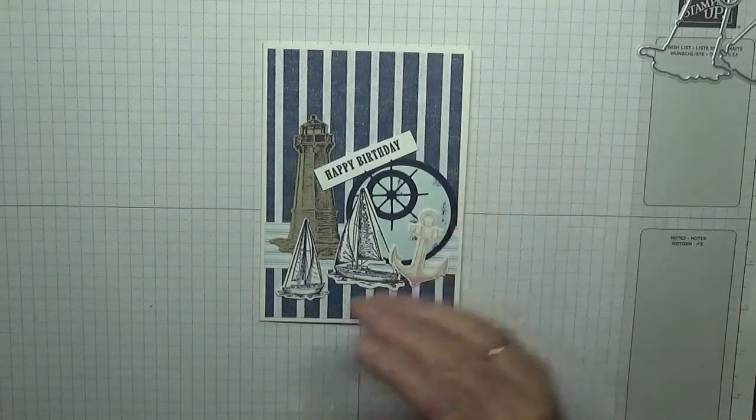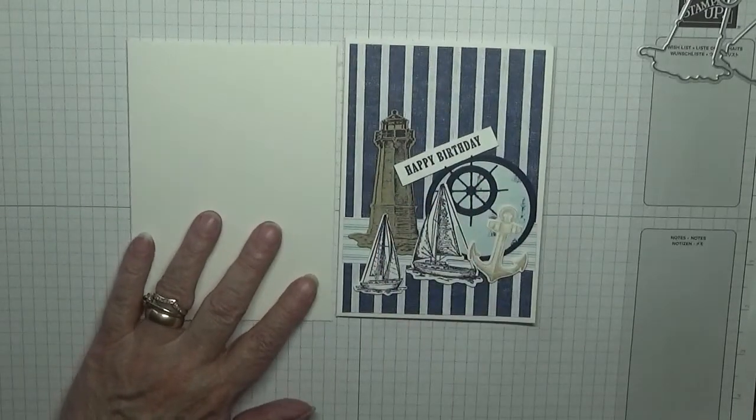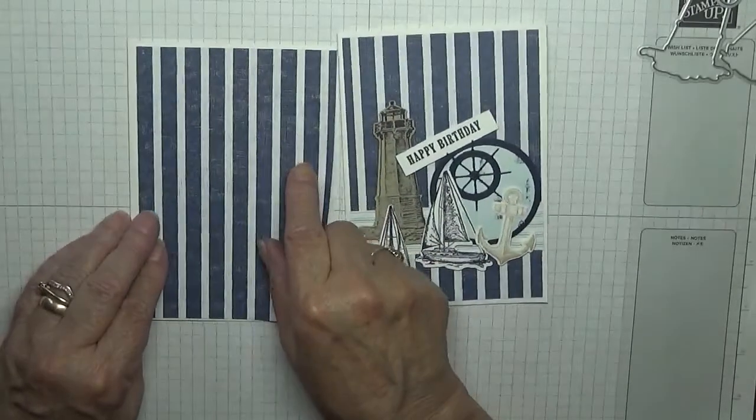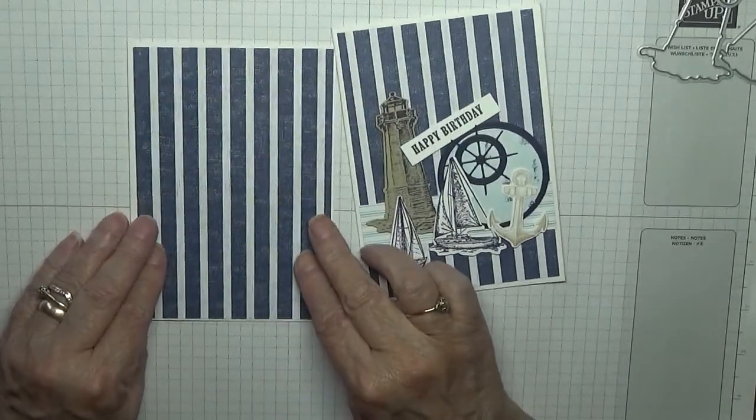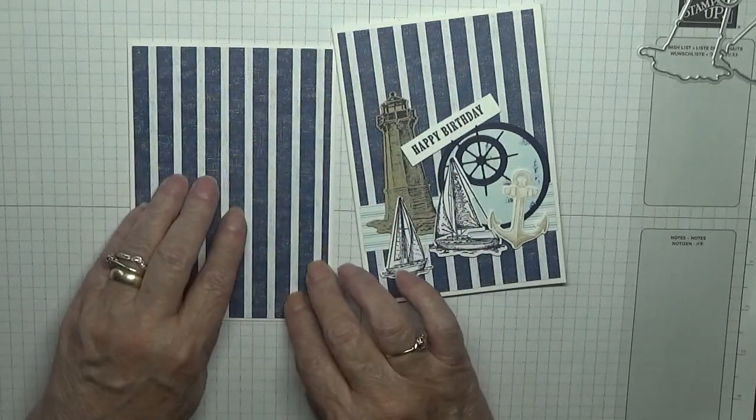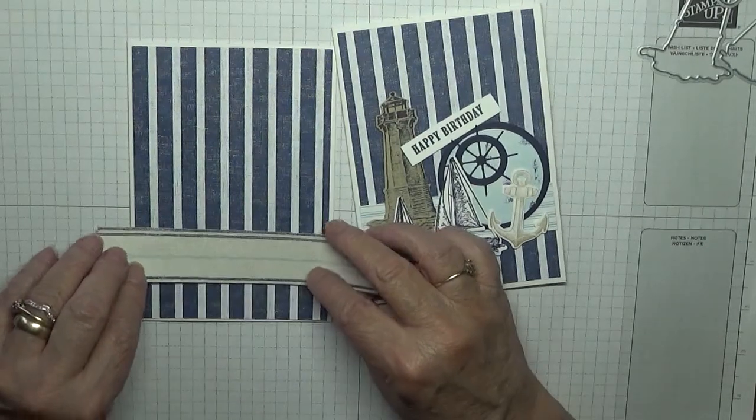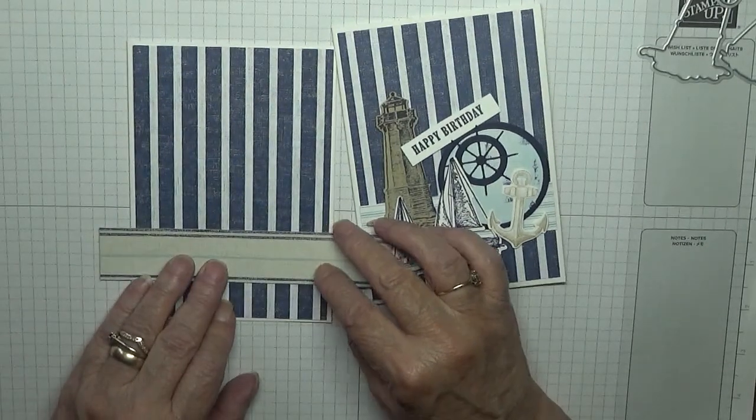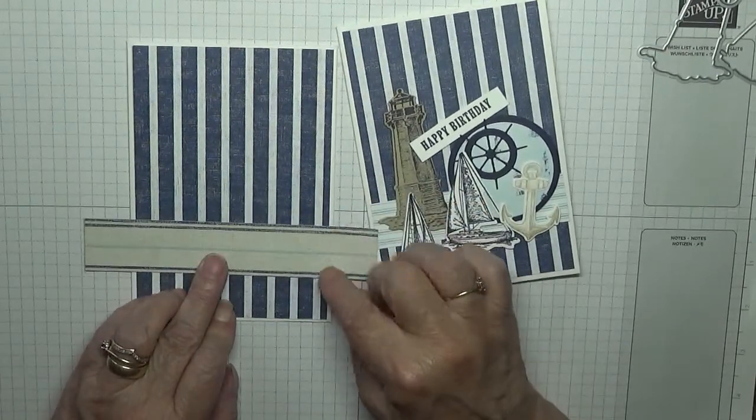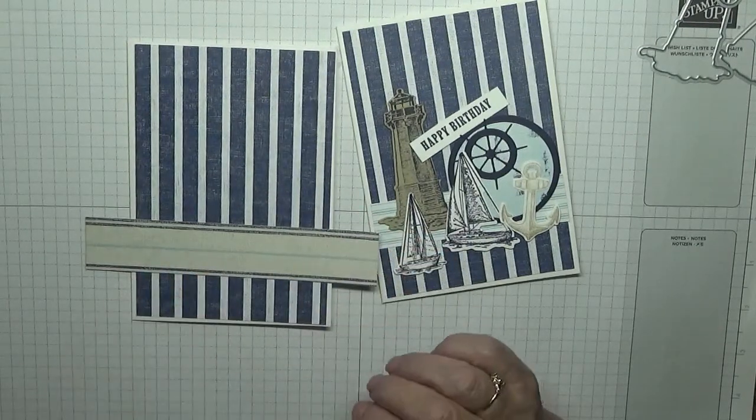For this card I've got a card base of eight and a half inches from the Sailing Home paper. Not much of this left now. This piece is five and five-eighths by three and seven-eighths inches. I have a strip to go along the bottom, this is an inch wide and I'll trim it down to fit.